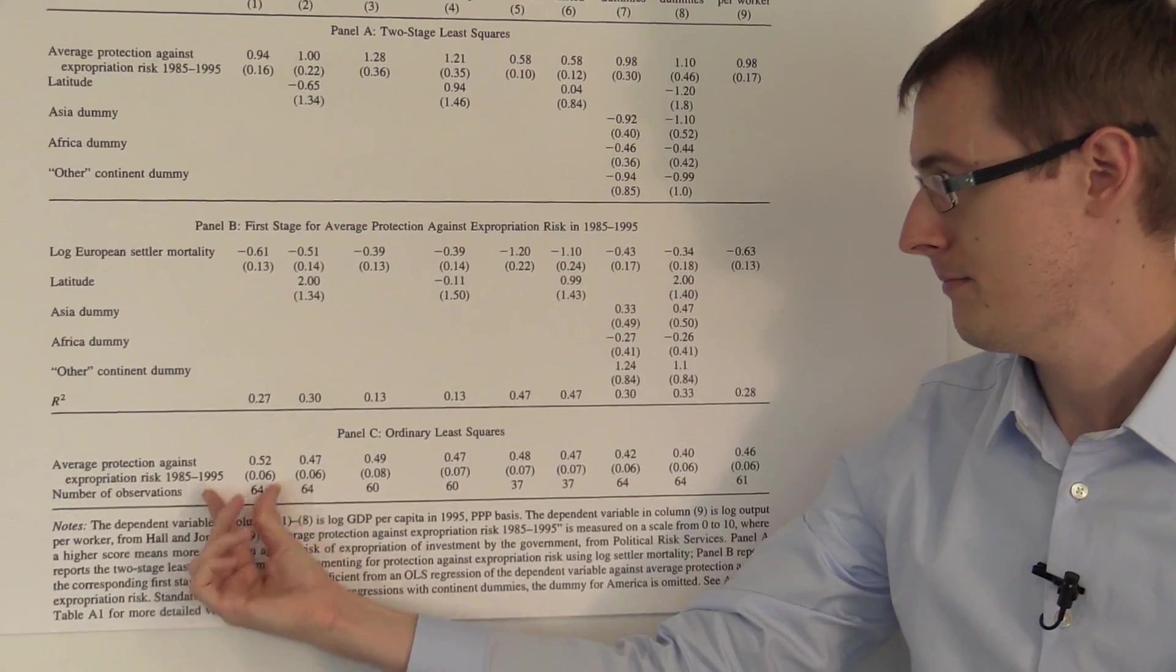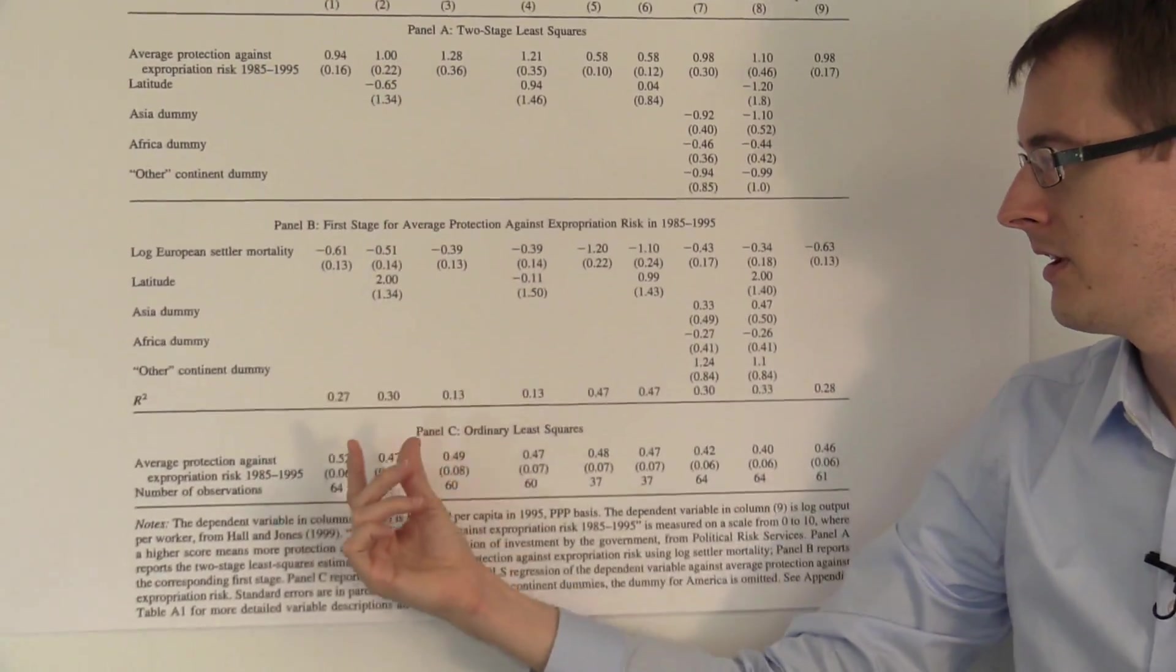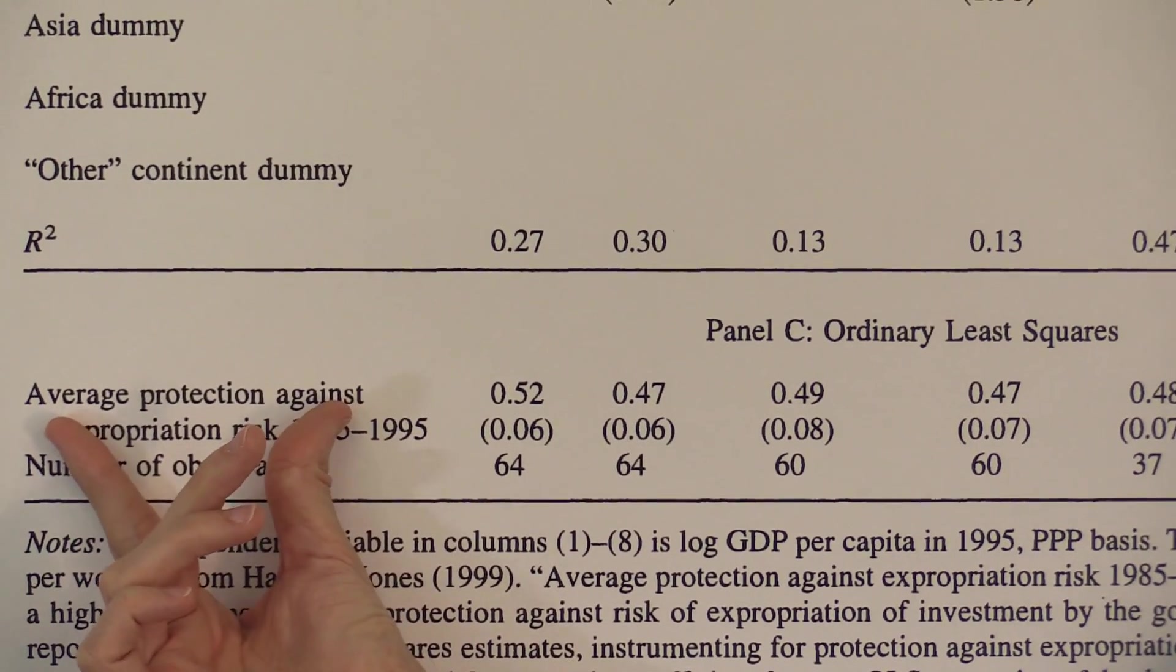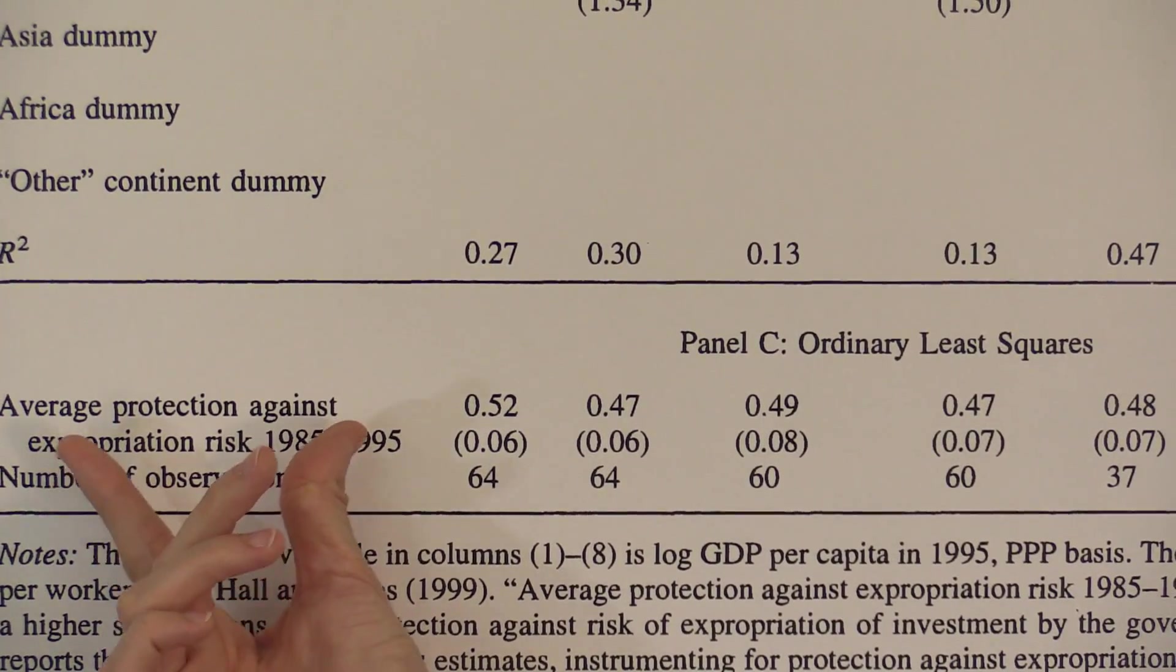So here in the first column, labeled Base Sample, we've got a coefficient of 0.52 on average protection against expropriation risk, property rights.